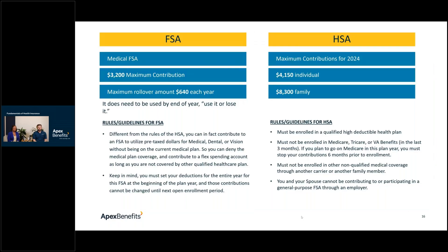Contribution amounts are set year to year by the IRS. For 2024: the FSA maximum contribution is $3,200, with a rollover amount of $640. For the HSA, the individual contribution limit is $4,150 and family is $8,300. There's also a catch-up contribution for people age 55 and older of an additional $1,000, bringing the limits to $5,150 for individual or $9,300 for family.